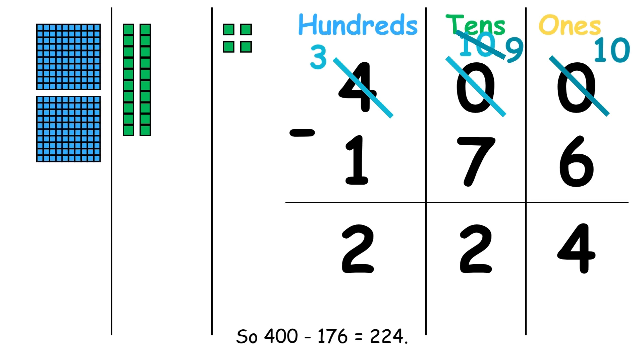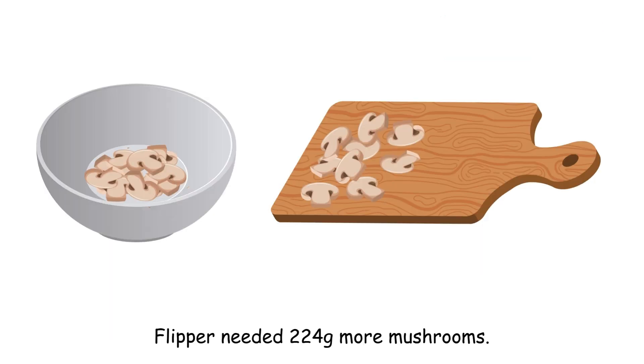So, 400 minus 176 equals 224. Flipper needed 224 grams of small mushrooms.